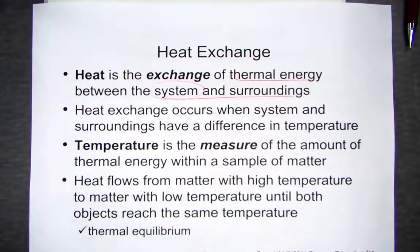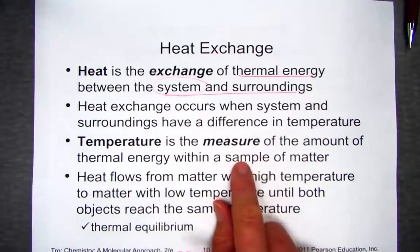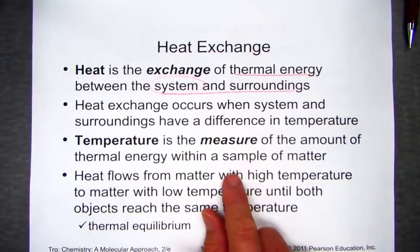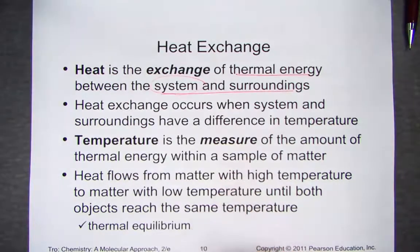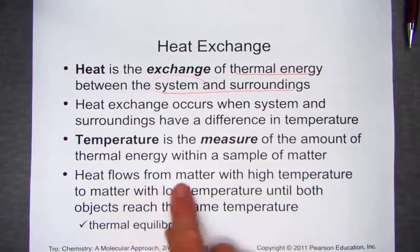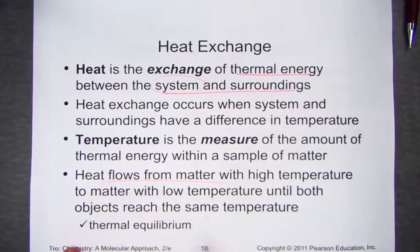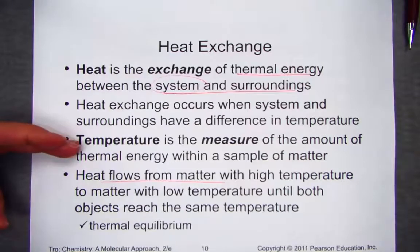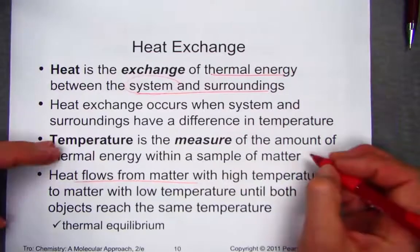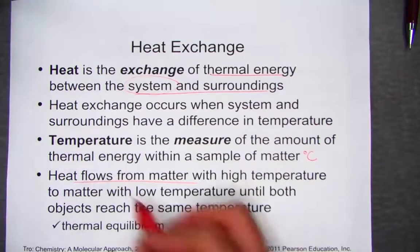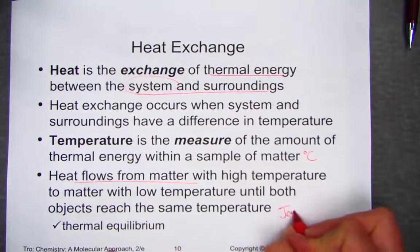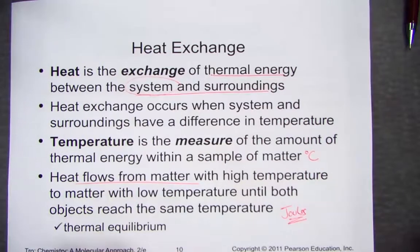Temperature is the measure of heat flow, usually in degrees Celsius, although in gas laws we also use the Kelvin scale. Heat flows from warmer to cooler objects. Heat is a form of energy, while temperature is a scale — usually measured in degrees Celsius. Heat is an energy typically measured in joules or kilojoules.